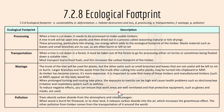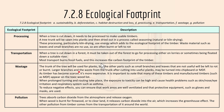Pollution: trees absorb carbon dioxide from the atmosphere and release oxygen — trees are known as carbon sinks. When wood is burnt for firewood or to clear land, it releases carbon dioxide into the air, further increasing the greenhouse effect and worsening climate change. Additional pollution from timber comes from transportation around the world, which burns fossil fuels.